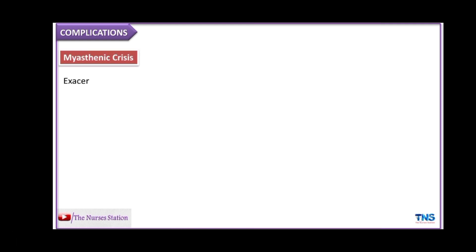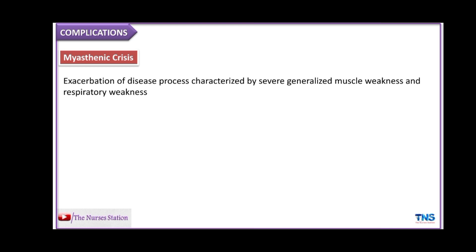The complications of myasthenia gravis include myasthenic crisis. This is an exacerbation of the disease process characterized by severe generalized muscle weakness and weakness of the respiratory muscles, which can result in respiratory failure, and the patient may need to be placed on mechanical ventilation.